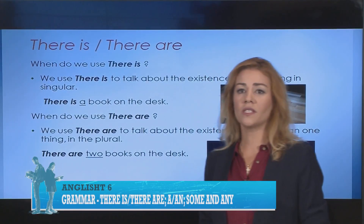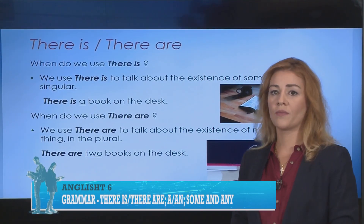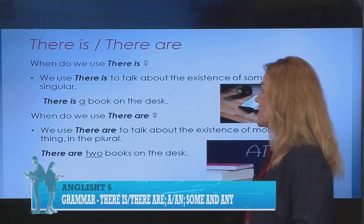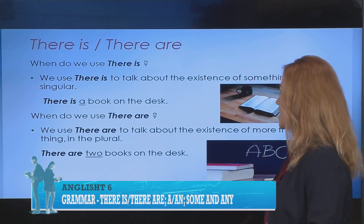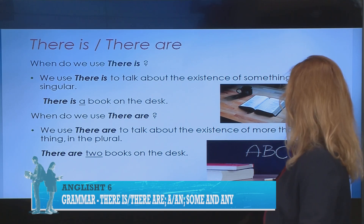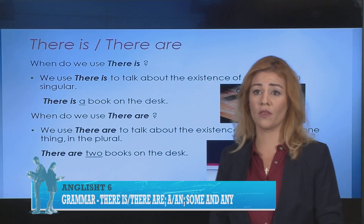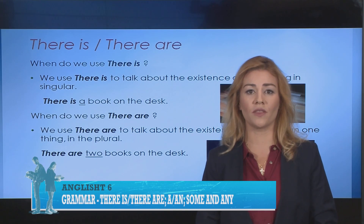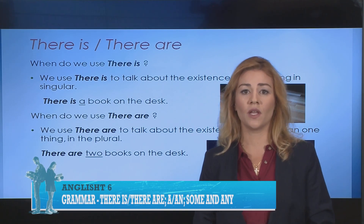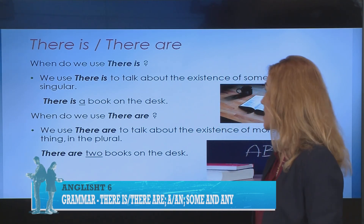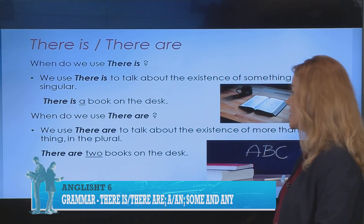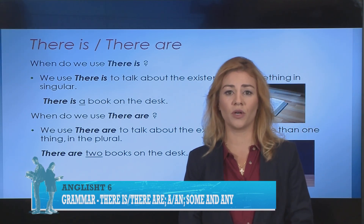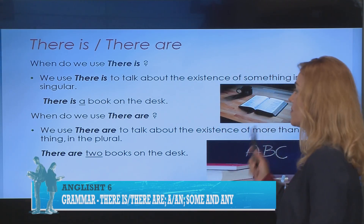So let's start with there is and there are. When do we use there is? We use there is to talk about the existence of something in singular. There is a book on the desk. Pra kur përdorim ne there is? Ne përdorim there is për të treguar ekzistencën e një sendi në numrin njëjës. Pra ndodhet një libër në bita volin, as you see.